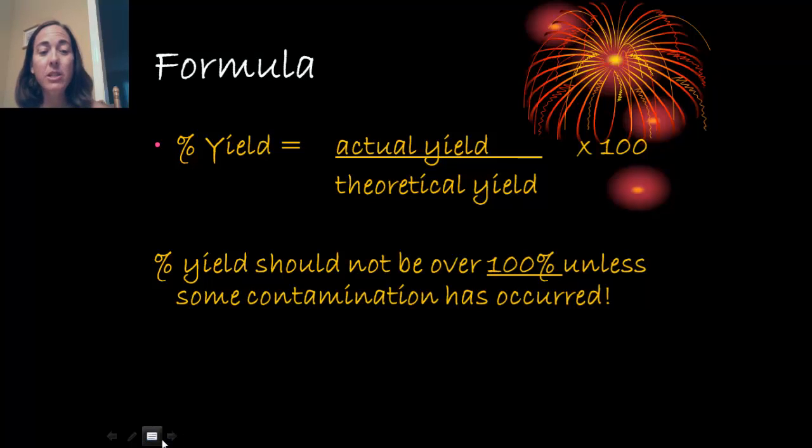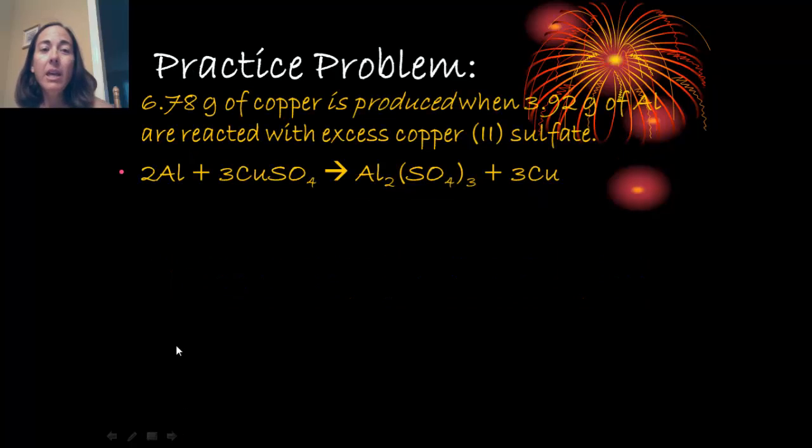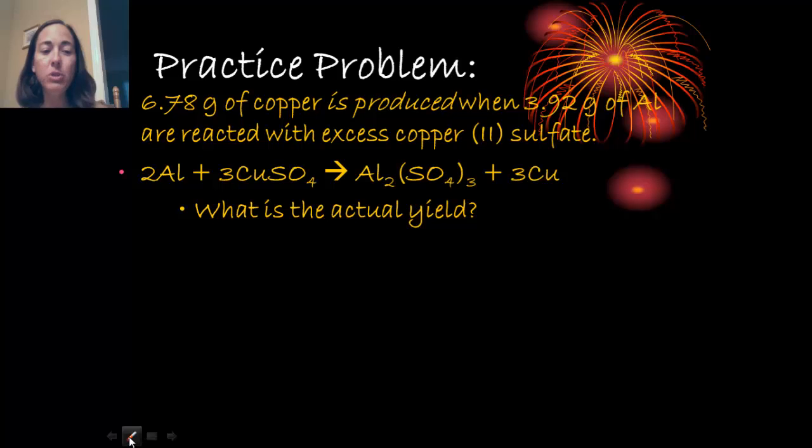Let's look at some problems. Here we're given that 6.78 grams of copper is produced when 3.92 grams of aluminum is reacted with excess copper(II) sulfate. The balanced equation is given below. It's a single replacement reaction. We need to find a couple of things here. First of all, what is the actual yield?